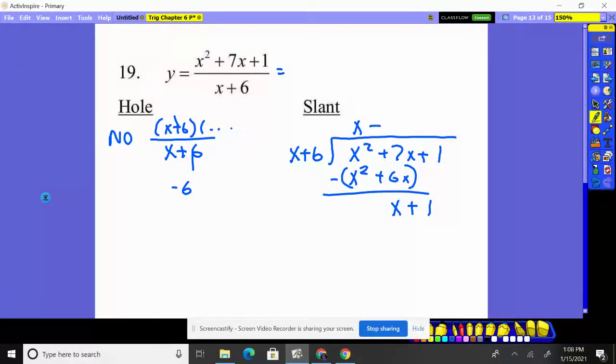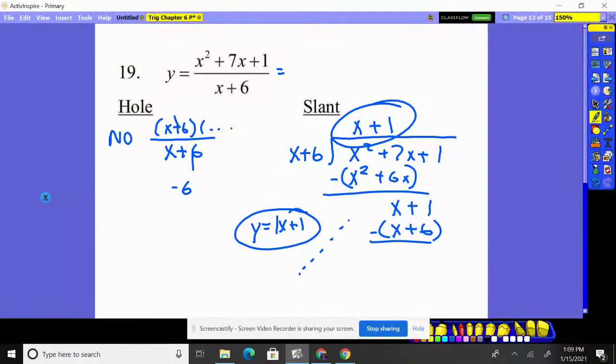X goes into X one time. One times X is one X. Six, I subtract the whole thing. Not worried about the remainder. This is what we want. Do not write X plus one as the answer. The answer is the line Y equals X plus one. That is your answer. That is a slope. It has a slope of one and a Y intercept at one. And you'll have some line that'll be slowly approaching, getting closer and closer, but never quite touching that slant asymptote.